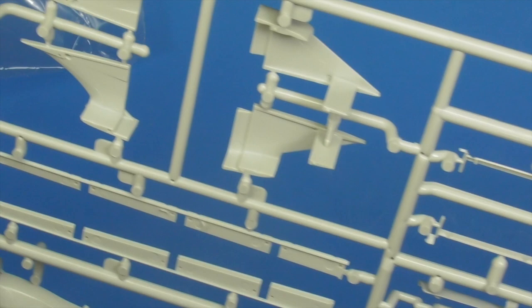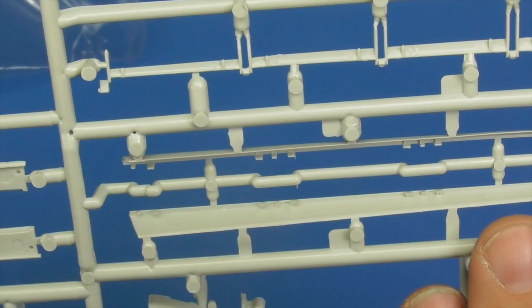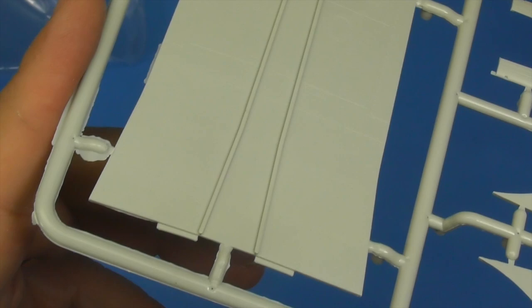Here's those very delicate control parts for the flaps and the slats. And again flash. And again some very nice detail, raised, recessed panel lines and rivets. That's it for that bag.